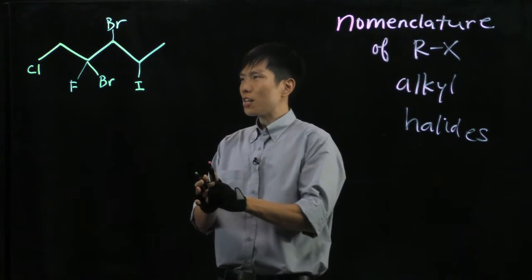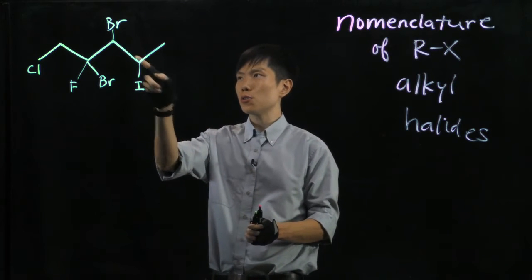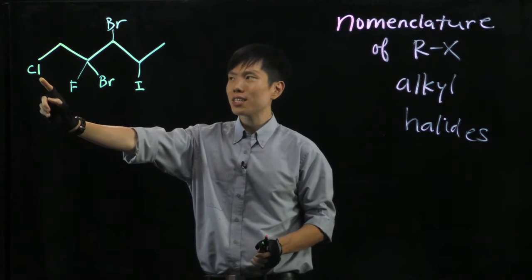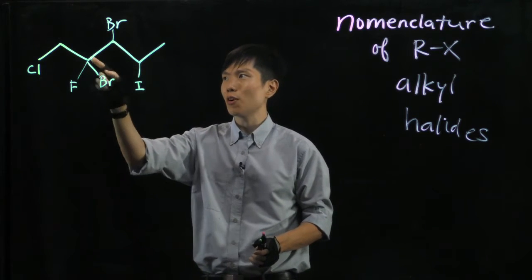We go with the longest chain of carbon first, as we count 1, 2, 3, 4, 5. Take note, this is chlorine, not a carbon, so one more time, 1, 2, 3, 4, 5.